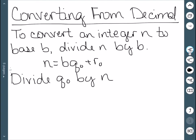The next step is to take that quotient and divide it by b, not n. So now q0 is equal to b times q1 plus r1. We have a new quotient and a new remainder.